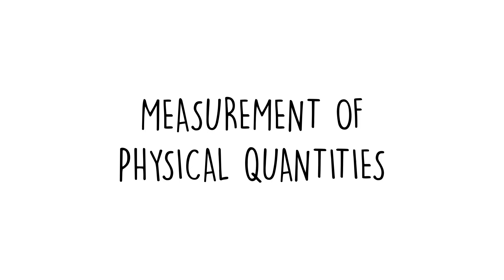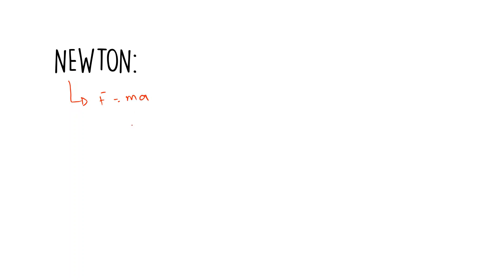Hey guys, this is part two of measurement of physical quantities for the AS syllabus for Physics Under 5 Minutes. We have already talked about some derived quantities such as speed and volume, and today we will learn to derive some common units. Let's start off with Newton. We know that Newton can be defined as F equals MA.